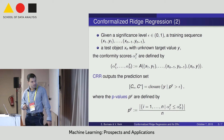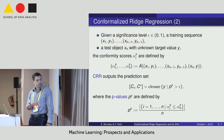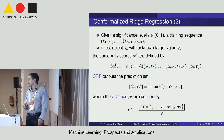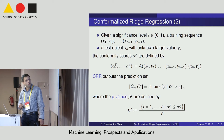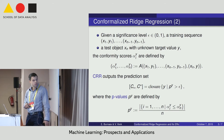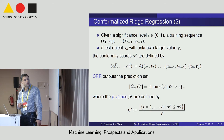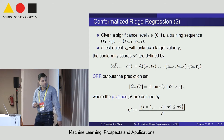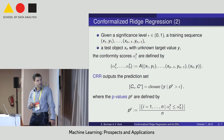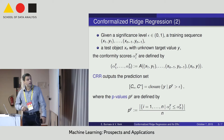We then calculate the proportion of conformity scores such that the conformity score for the last element is bigger than all other conformity scores. We select those target values y for which this proportion is bigger than the given confidence probability value epsilon.